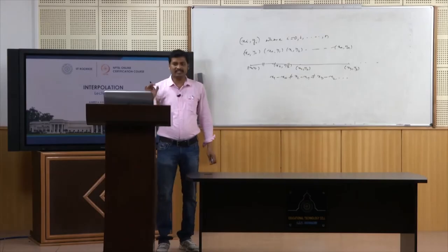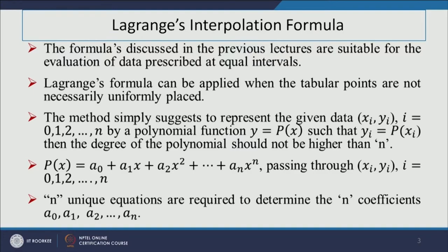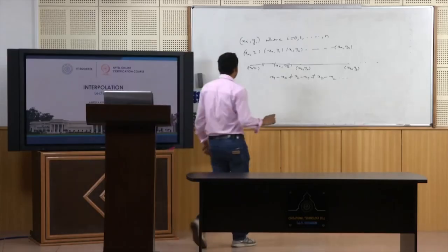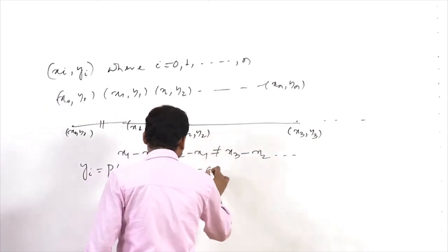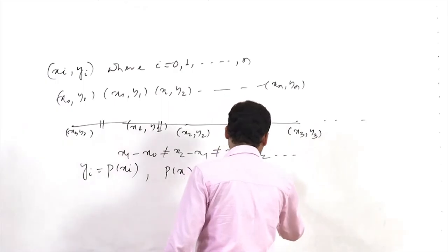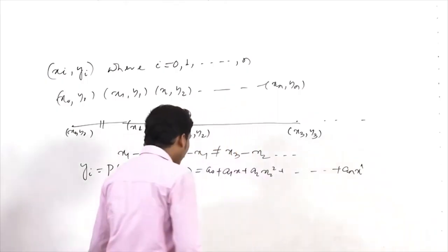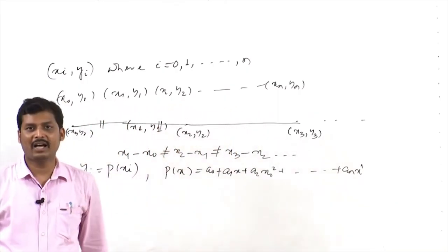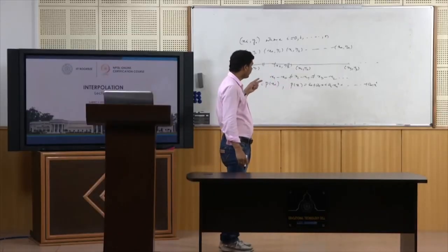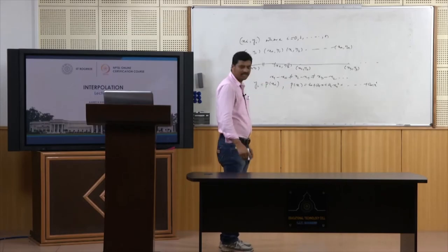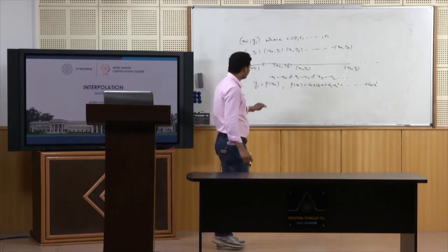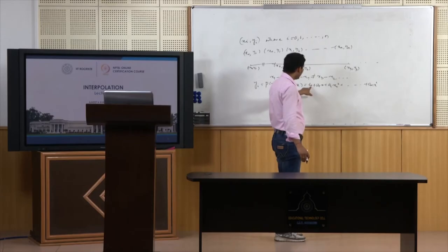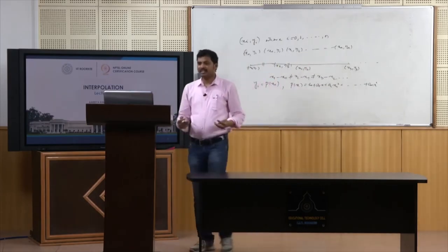These methods suggest representing the given data Xi, Yi for i equals 0 to N, approximated in the form Yi equals P(Xi), where P(X) can be written as A0 + A1*X + A2*X² up to AN*X^N. The coefficients A0, A1, A2 up to AN are to be determined. To determine these N+1 coefficients, since it is a polynomial of degree N, we need N+1 equations.